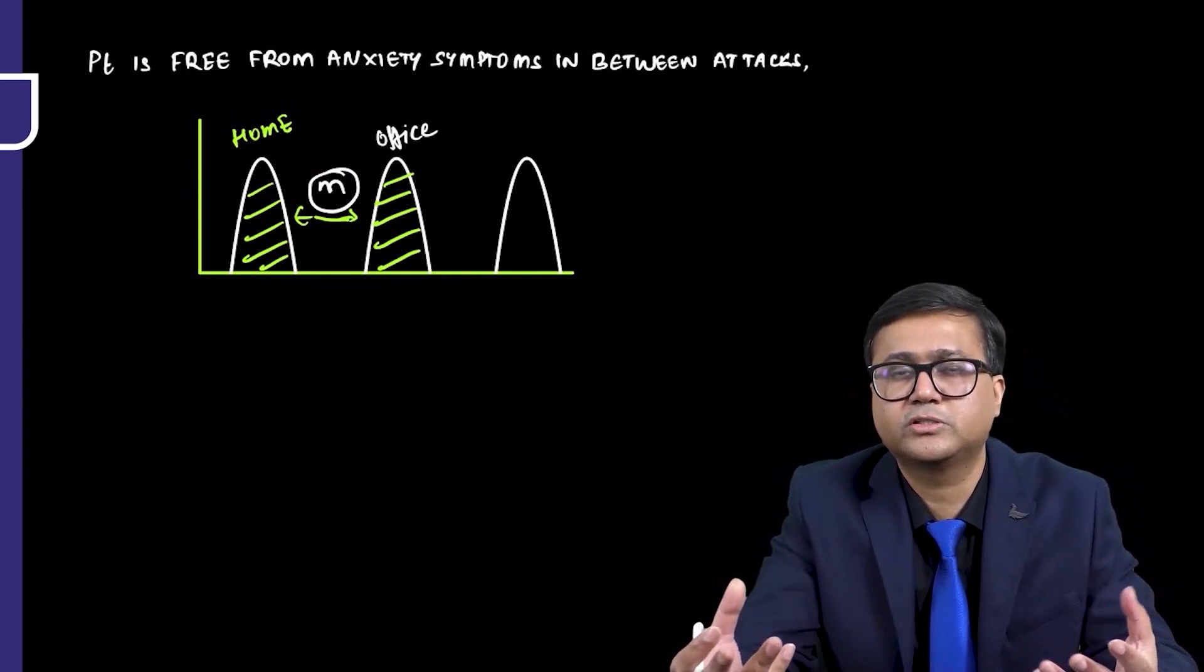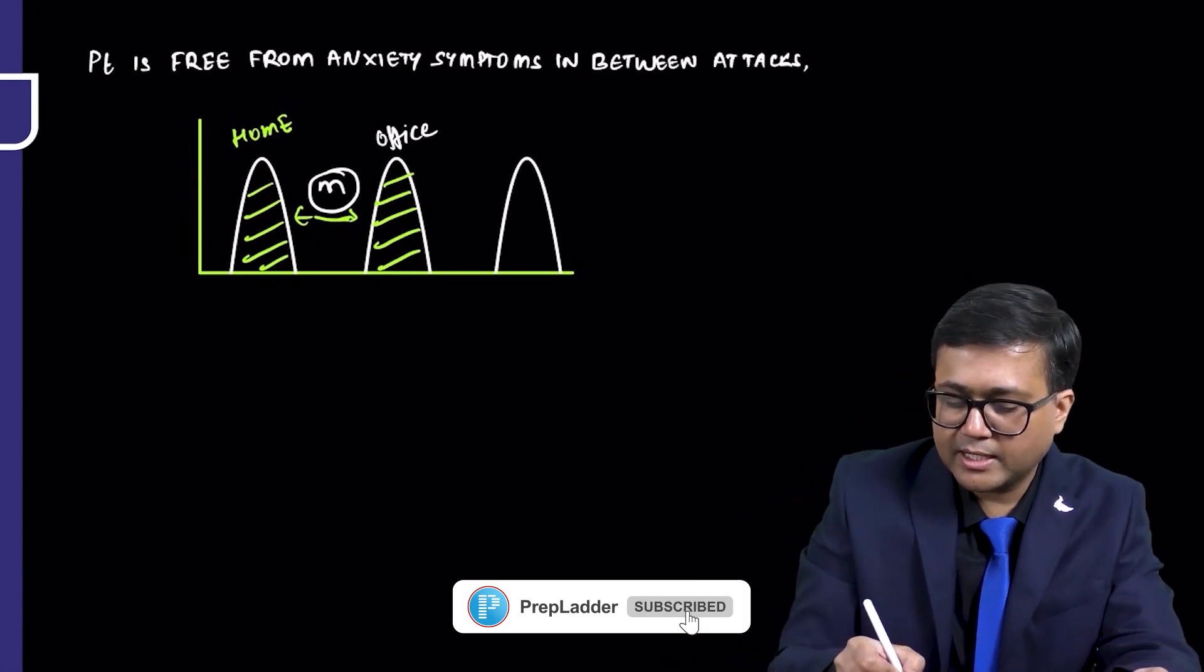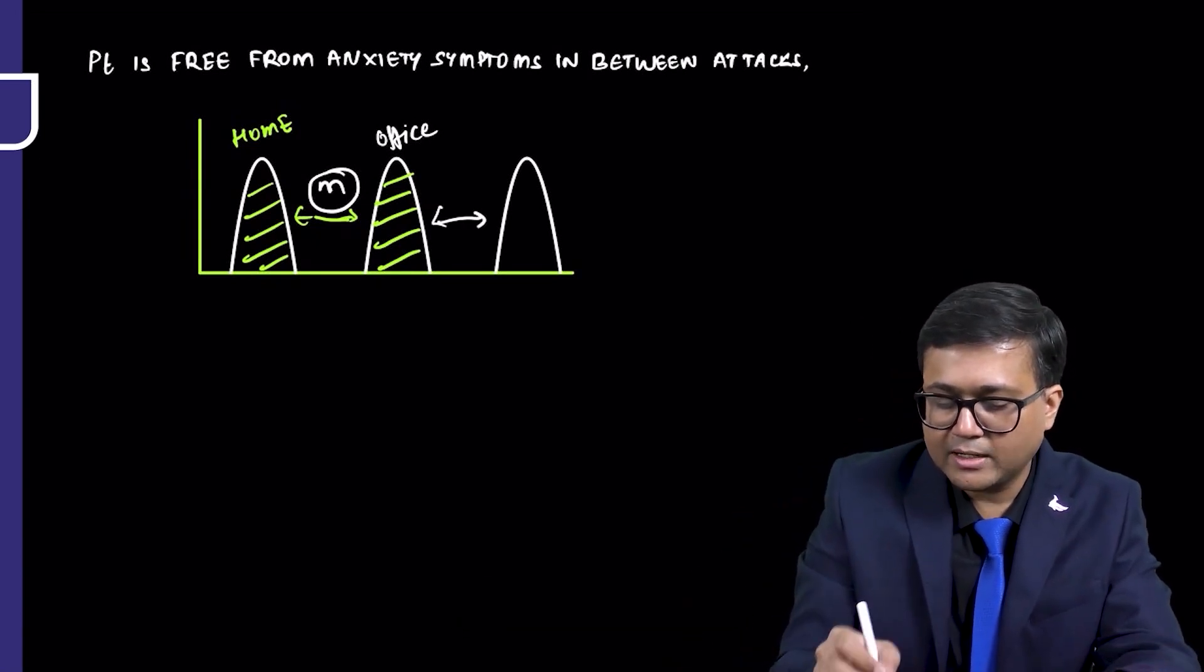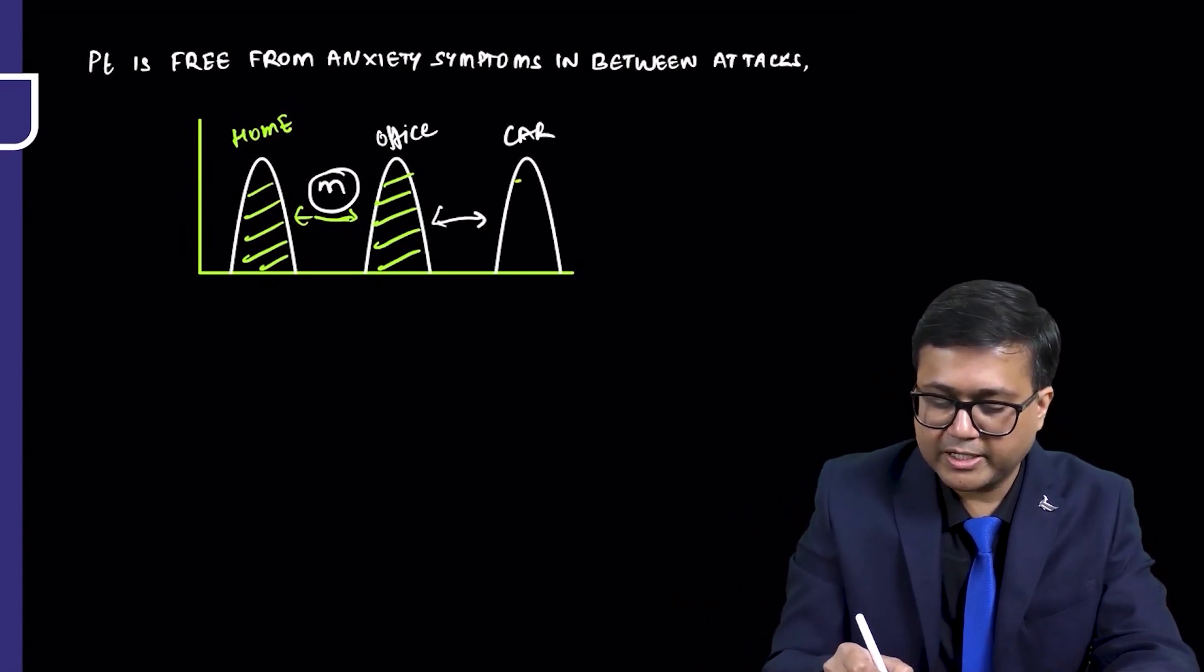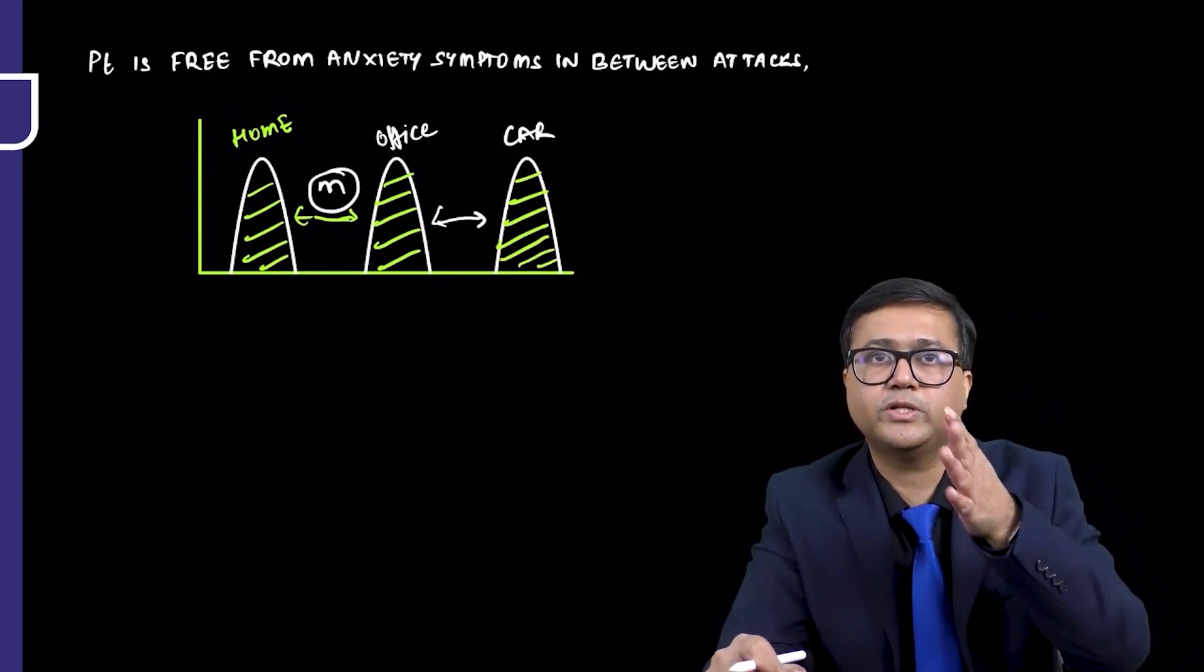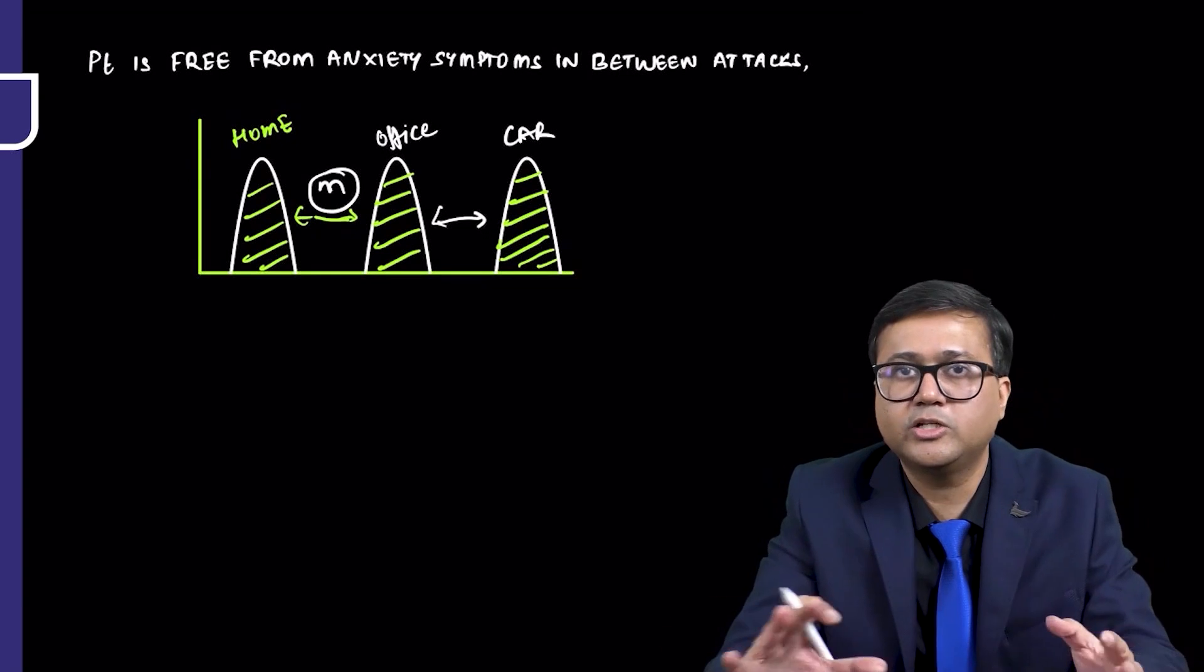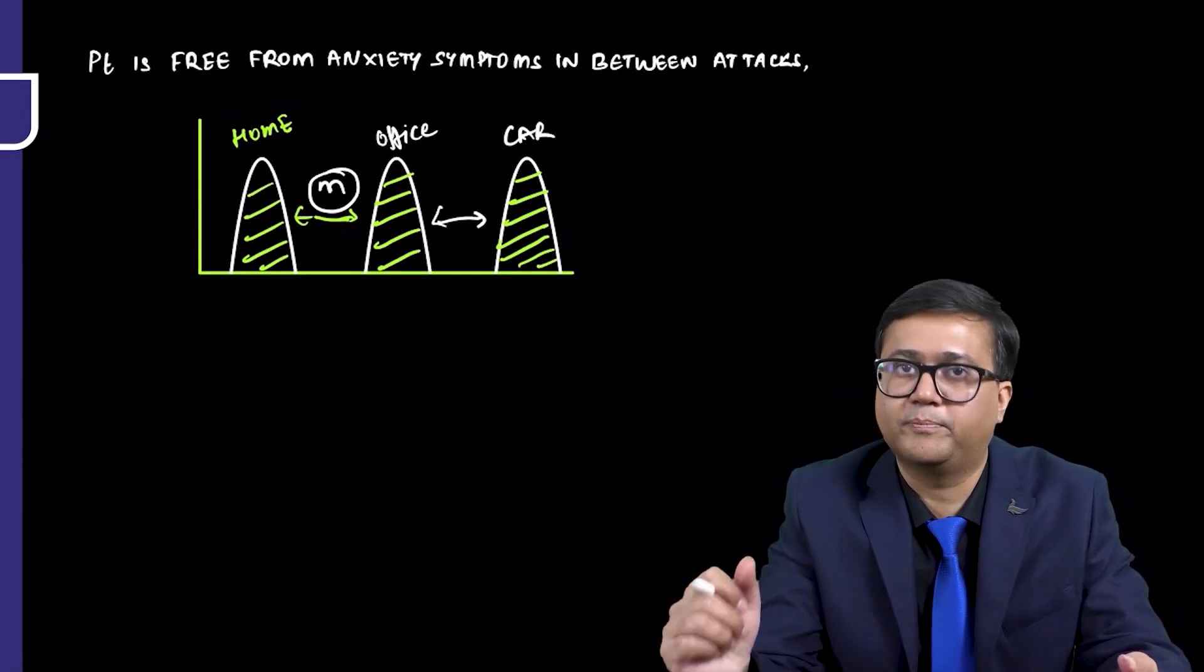Thereafter, after few days, the patient had another similar attack when he was at his office. In between, if you see, the patient is all well. In between, he would say everything he was doing as before. Again, another similar attack occurred after few days when the person was driving in his car. If you see this diagram, you could appreciate in between, the person is becoming all well. There is no anxiety. This is how characteristically a person with panic disorder would come.